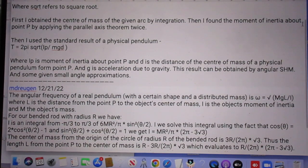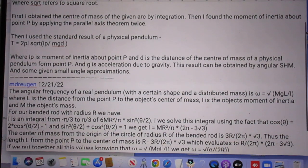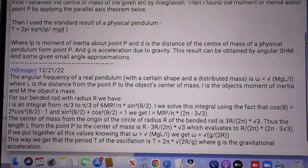First I obtained the center of mass of the given arc by integration. Then I found the moment of inertia about point P by applying the parallel axis theorem twice. T is 2 pi times the square root of I divided by MgD, where I, I of P, is the moment of inertia about point P and D is the distance of the center of mass of a physical pendulum from point P. And g is the gravitational acceleration. This result can be obtained by angular simple harmonic motion and some given small angular approximations.